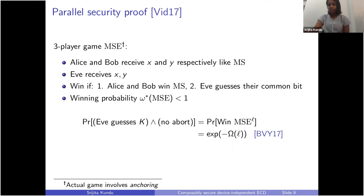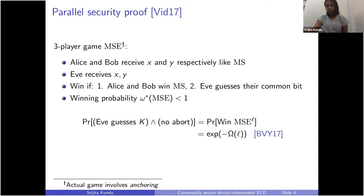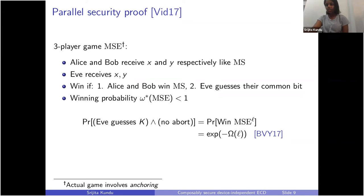So Eve's guessing probability for K is exponentially small, depending on the abort probability, which is fine — that's supposed to depend on the abort probability anyway. This is exponentially smaller in L. The corresponding min-entropy we get is going to be linear in L, and then we can do privacy amplification to get a large final key.